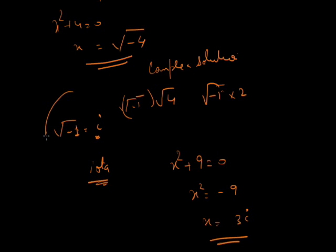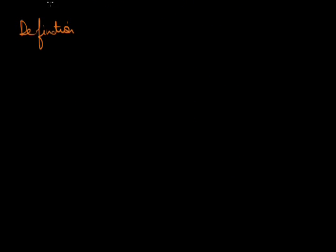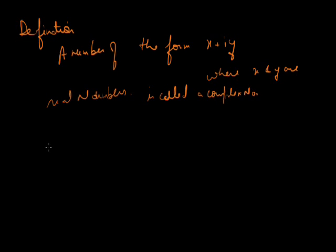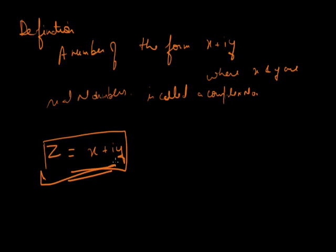We have the symbol iota, where the square root of minus 1 is defined as iota. Now let's come to the definition of a complex number. A complex number is a number of the form z equals x plus iota y, where x and y are real numbers — because iota is separated out, what remains are real numbers. This is called a complex number.